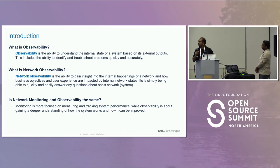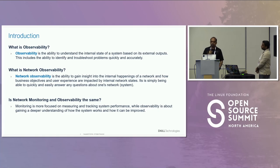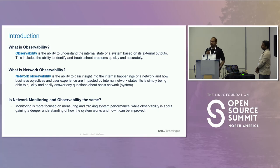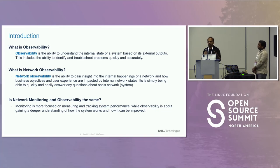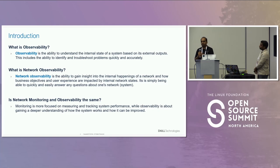That brings us to an important question: is network monitoring the same as network observability? The short answer is no. Although the terms are often used interchangeably, there are crucial differences between the two. Network monitoring focuses on measuring and tracking the performance of the system. Network observability, on the other hand, provides a deep understanding of the system itself. While network monitoring keeps a constant eye on your system performance, observability goes a step further and offers insight into the inner workings of your network.